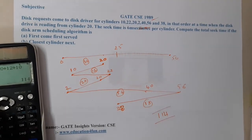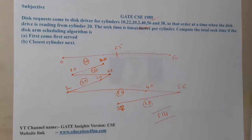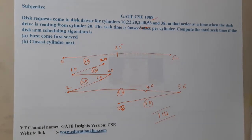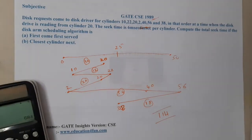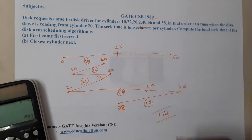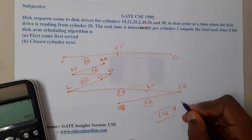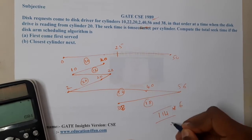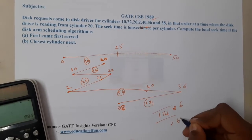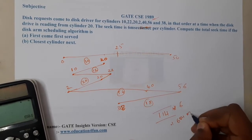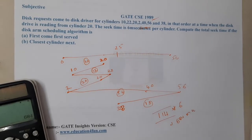So the total is 144, and 144 into 6 gives 684 milliseconds.